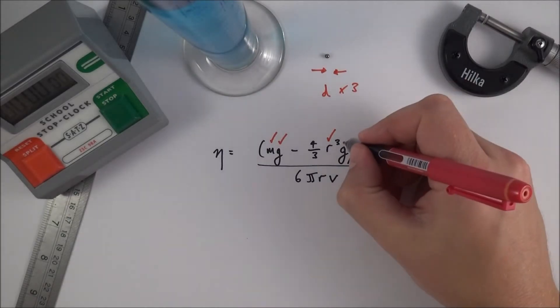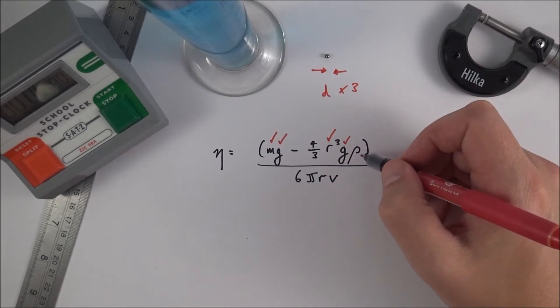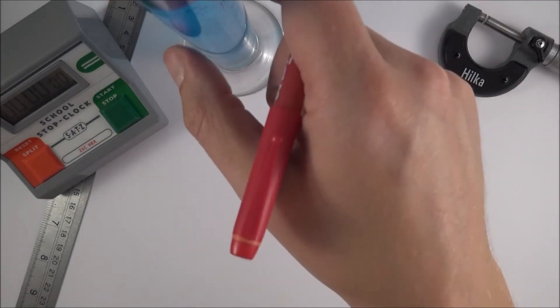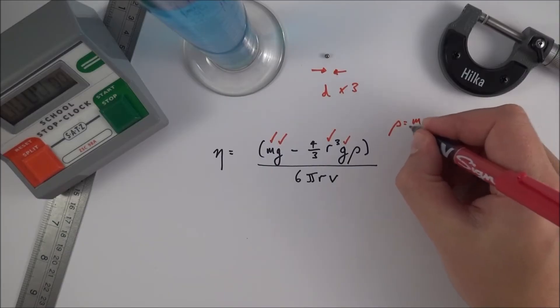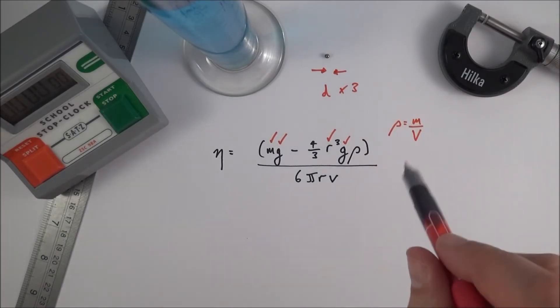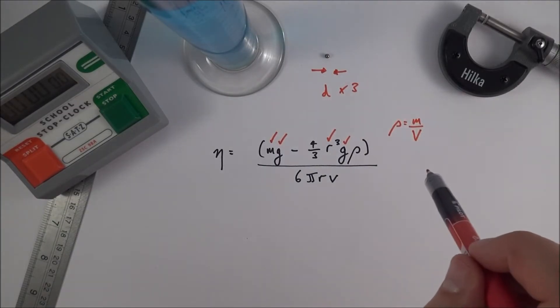We already know g is 9.81, but this thing here rho, this stands for the density of the liquid. Now to work out the density it's going to be equal to the mass divided by the volume and this is something that you can work out before you start the experiment or even afterwards.